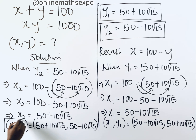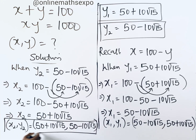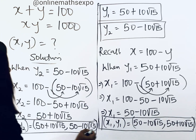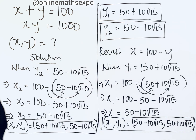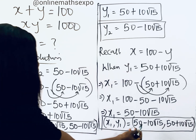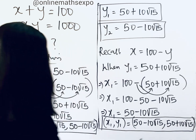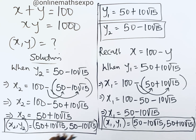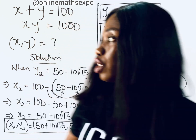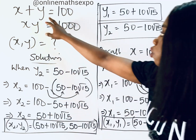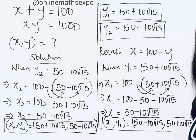Let's box both solution sets. Notice that in the first set the x value is the second y value, and vice versa — the sets are symmetric. We'll now verify by substituting one set back into the original equations to confirm x plus y equals 100 and x times y equals 1000.